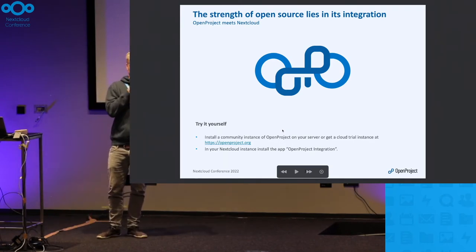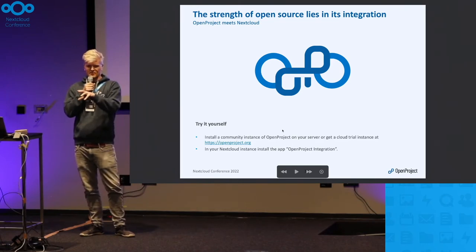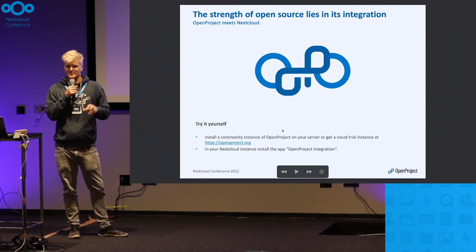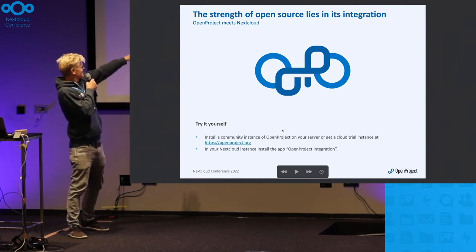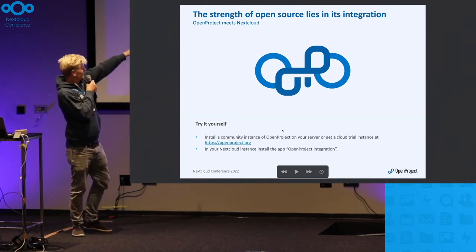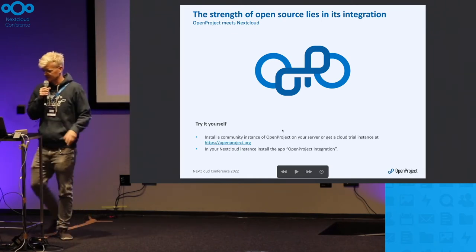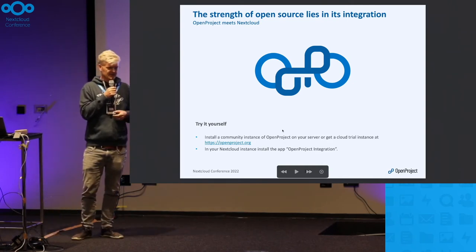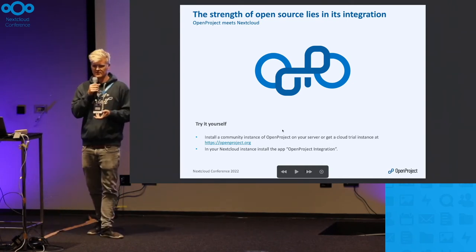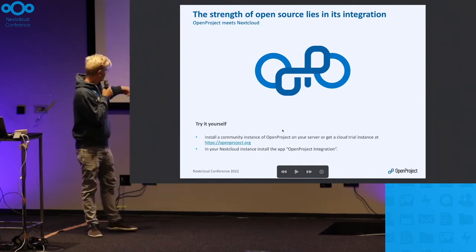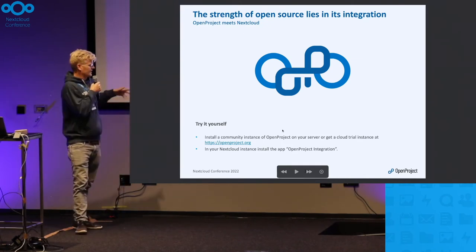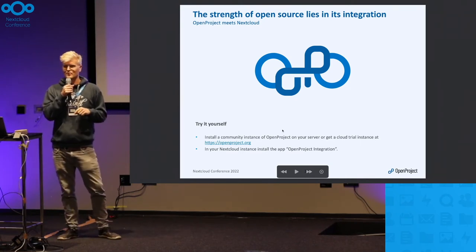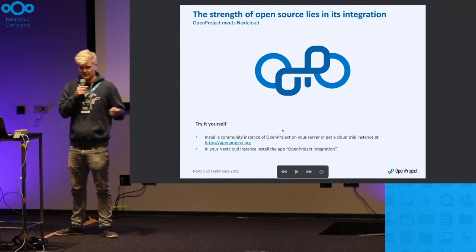Integration is hard, especially between such big systems as Nextcloud for file management and OpenProject for managing work. But fortunately both systems are open source. You can try it now yourself — just grab an OpenProject instance, download it, install it on your server or get an instance from our cloud, and on your Nextcloud instance just install the Nextcloud app 'OpenProject Integration' and off you go. It's already there.